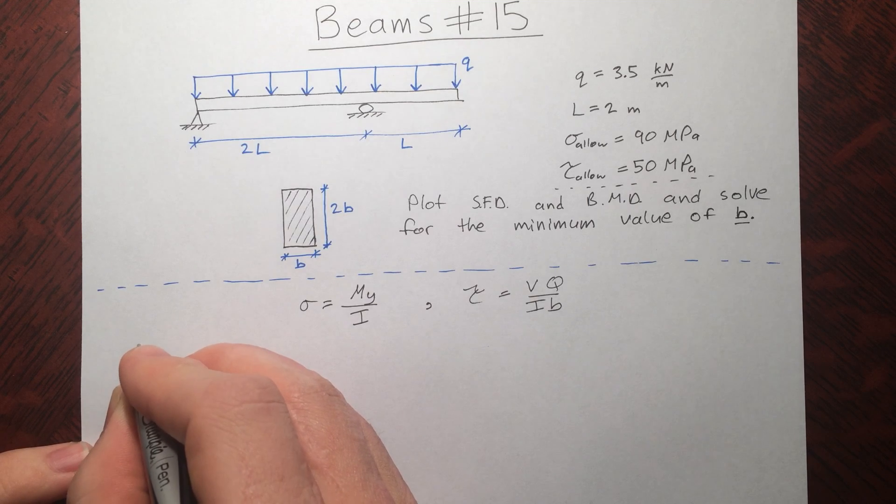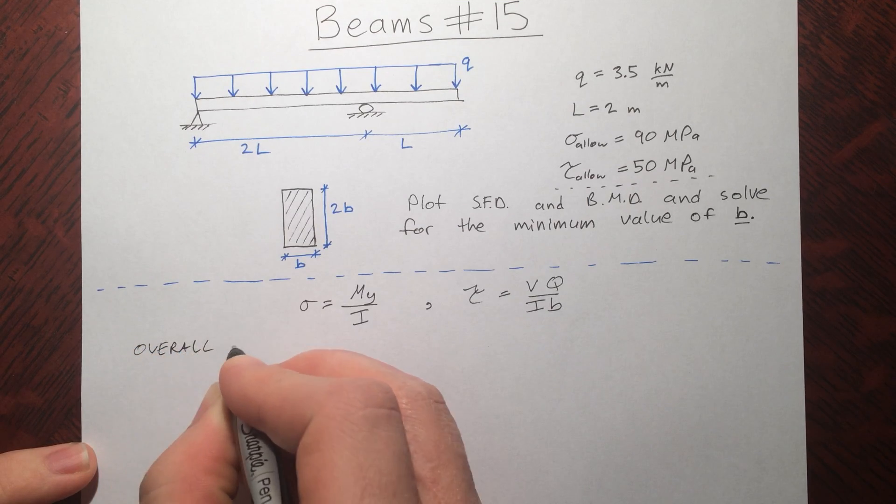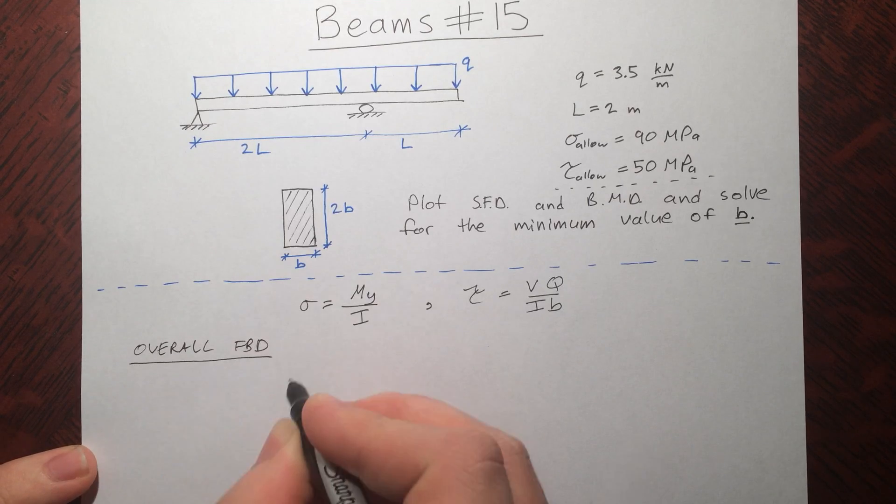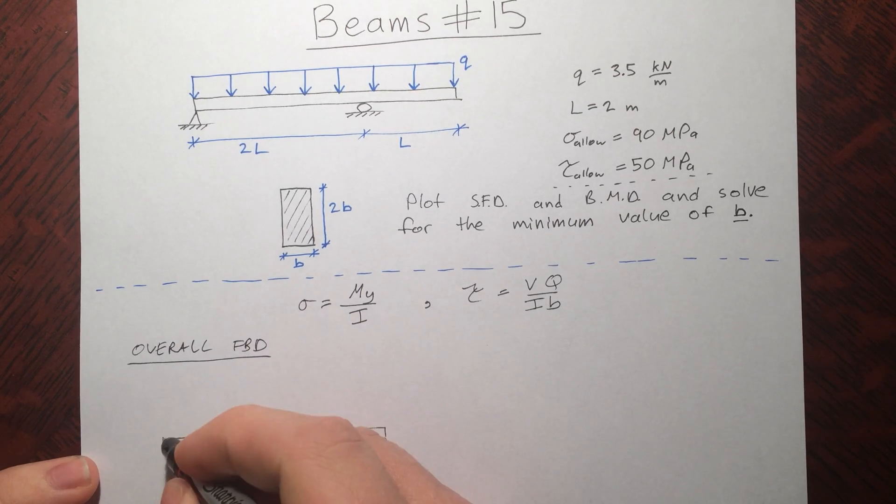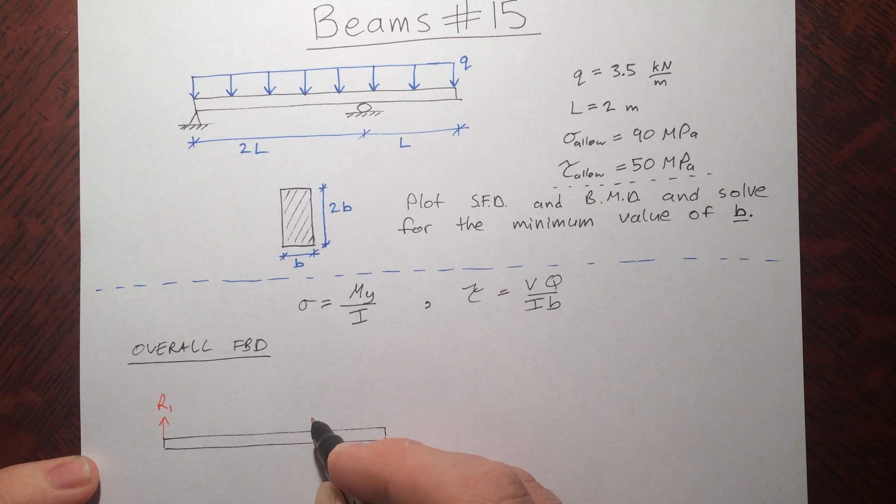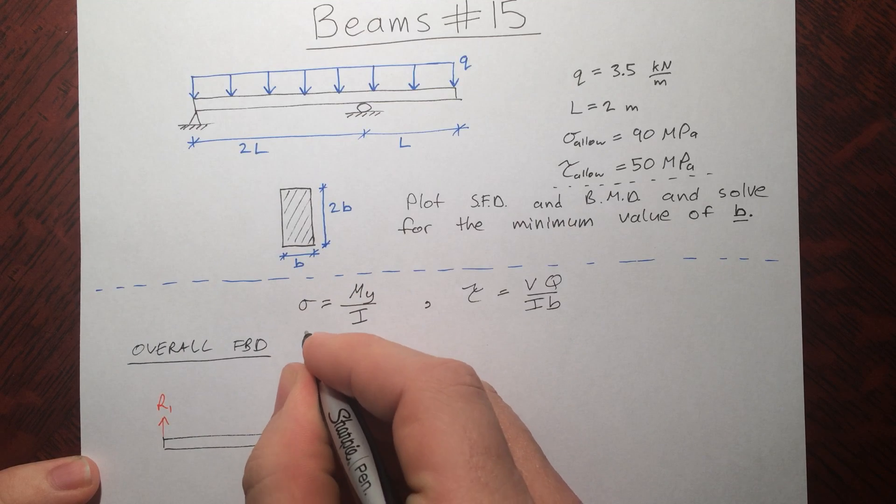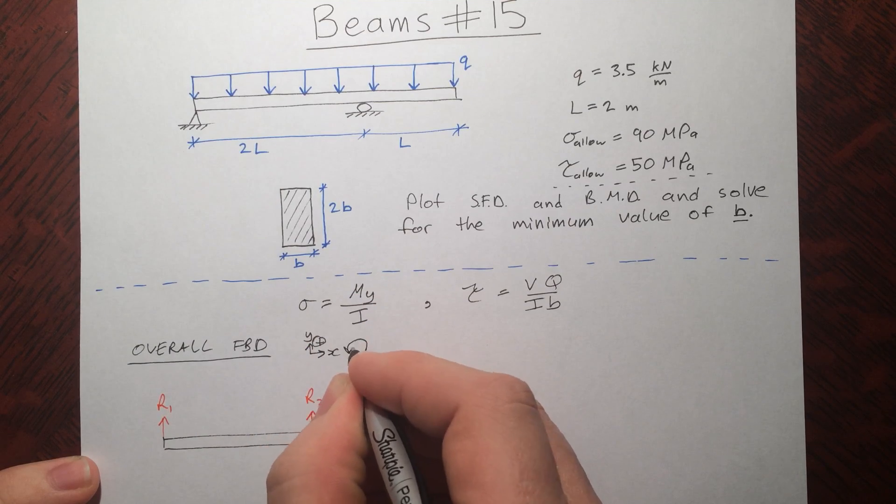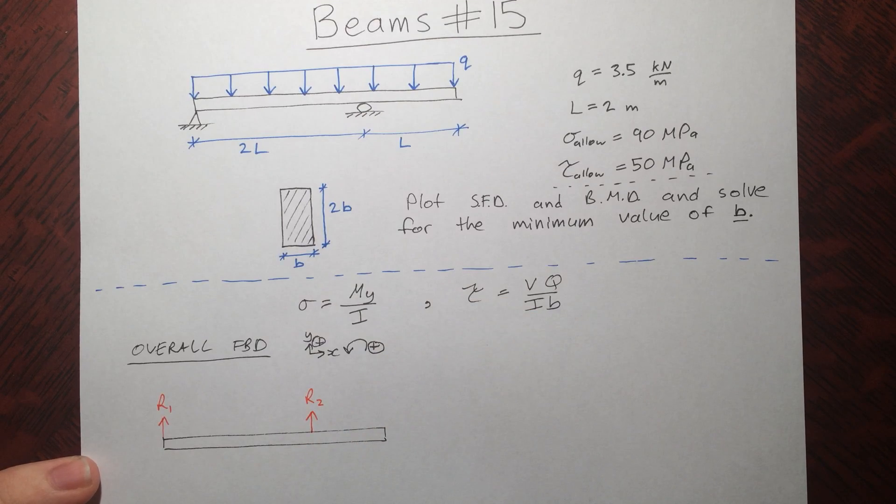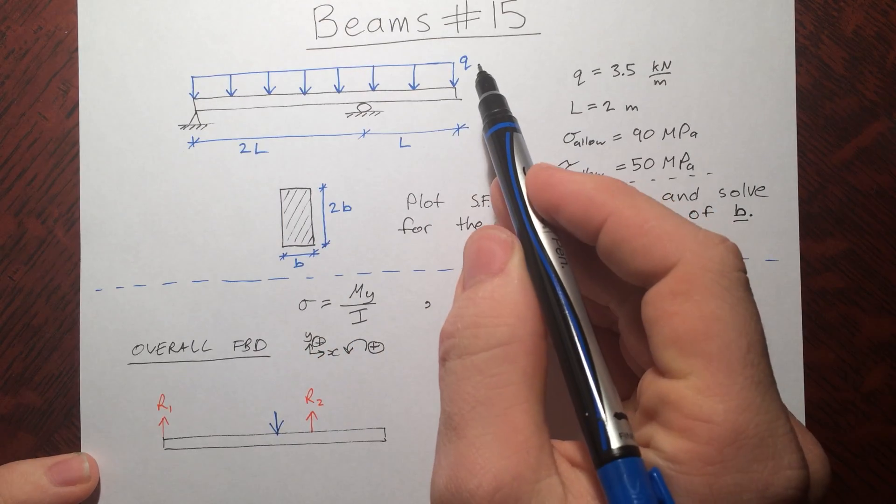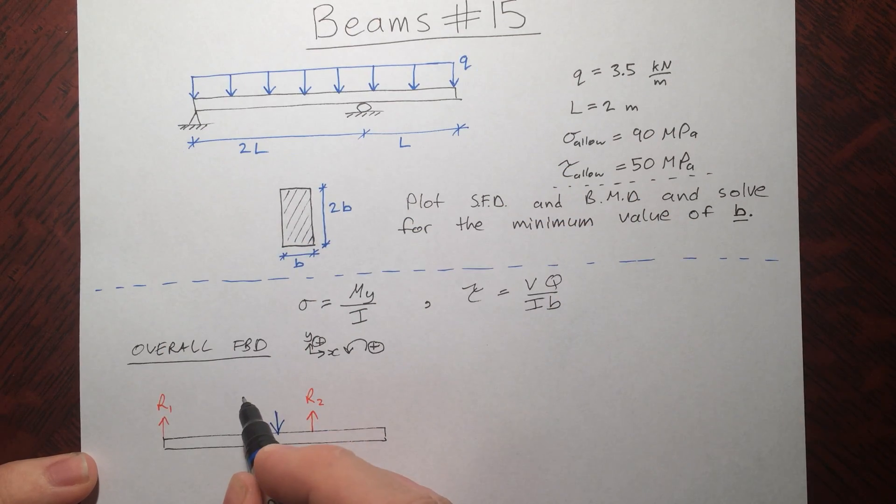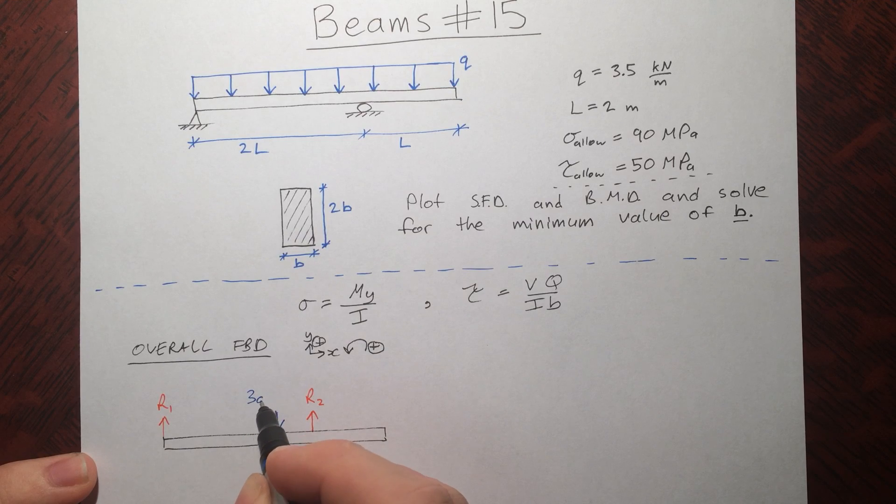So we'll start, like always, in every beam scenario, with an overall free-body diagram. All right, and the magnitude of this force is Q, given in some sort of force per meter times the total number of meters, in this case it's 3L. Now we can do sum of forces and sum of moments.